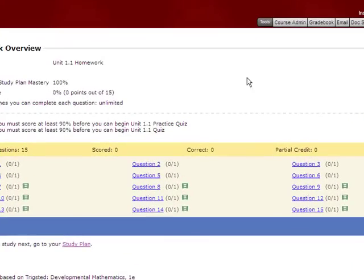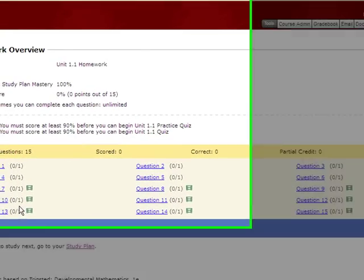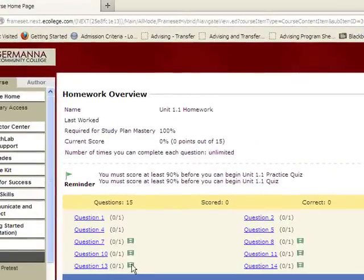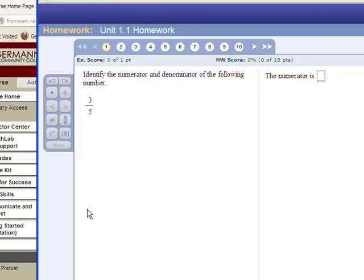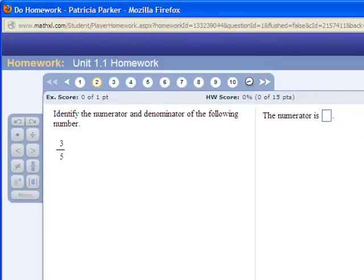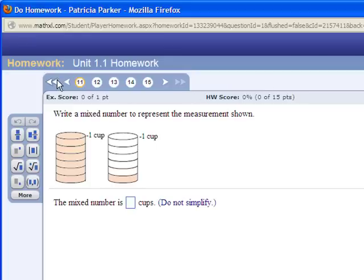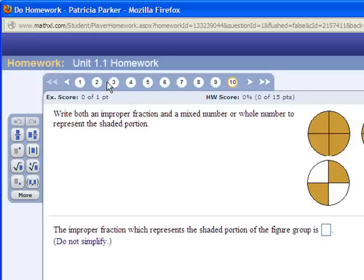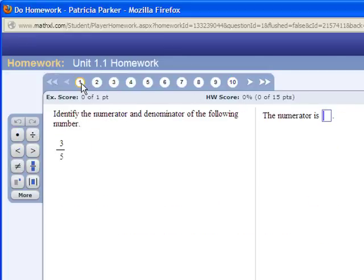This homework has 15 questions. The little green symbols here indicate that those questions have video lectures available to go with them. First let me explain how the homework scoring works. If you notice across the top are the problems. The single arrow goes question by question. The double arrow goes to the next page. There are no checks or X's because we haven't done any problems yet.